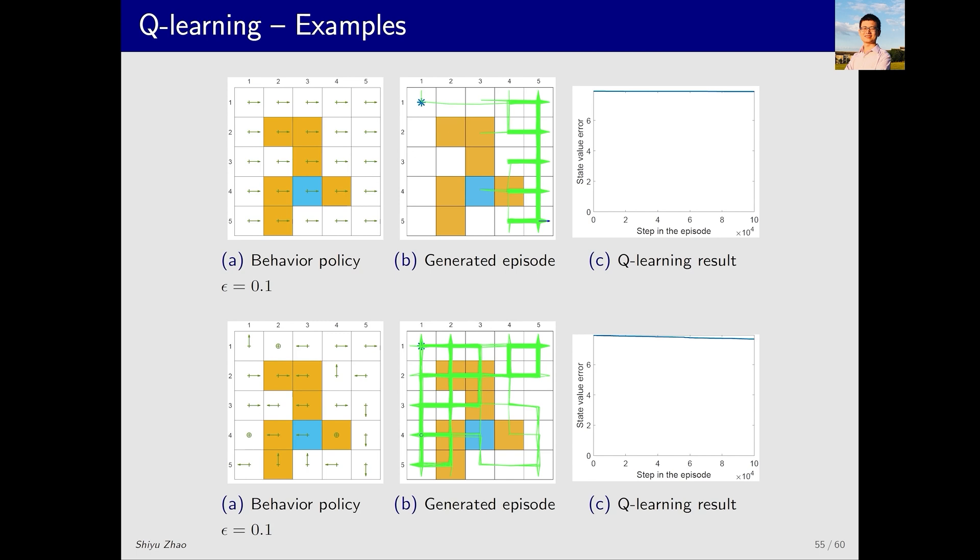If we consider an even less exploratory policy, say epsilon equals 0.1, then there's a higher likelihood that the policy will choose to move right at nearly every state. The data obtained in such a case would be even worse, and the final policy obtained is also poorer. Since epsilon is quite small, the policy's exploratory ability is poor. The resulting samples lead to significant errors in the final policy obtained.